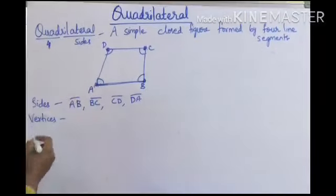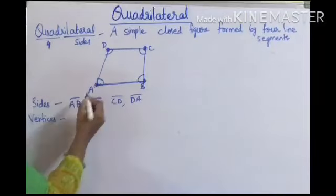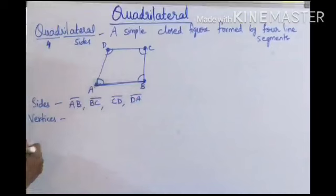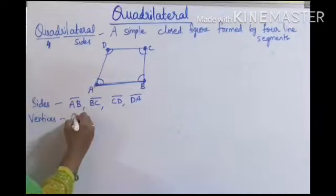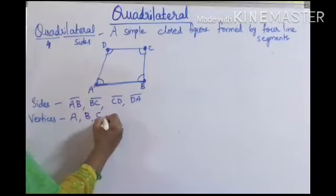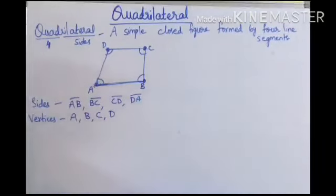Now coming to vertices — vertices are nothing but the corners. Here A, B, C, D are the four vertices.